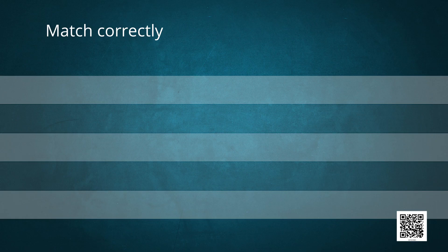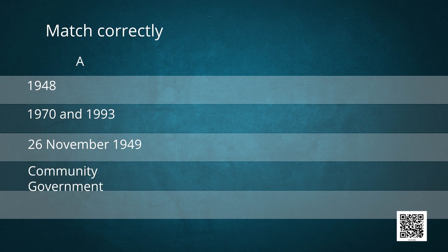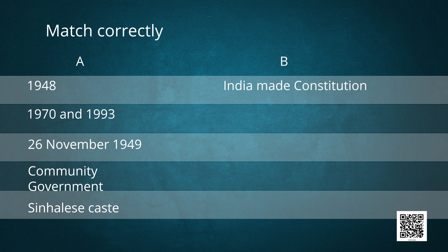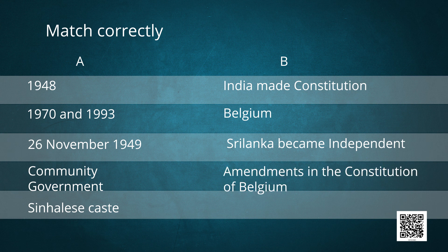Now let's move to the last question of this text, which is a matching exercise. In part A: 1948, 1972-1993, 26 November 1949, Community Government, Sinhalese. In part B: India made constitution, Belgium, Sri Lanka became independent, Amendments in the constitution of Belgium, Sri Lanka.